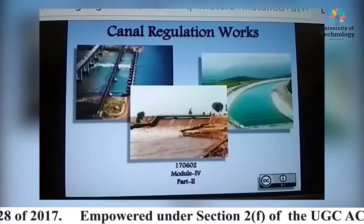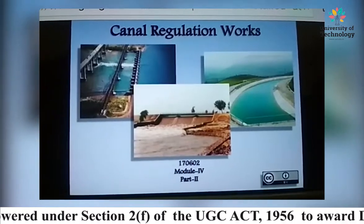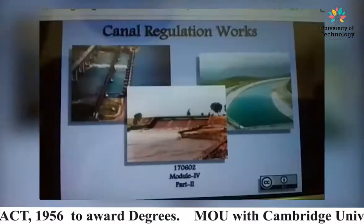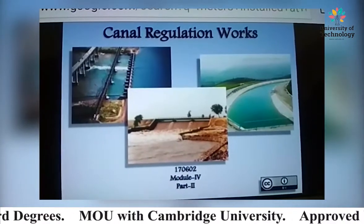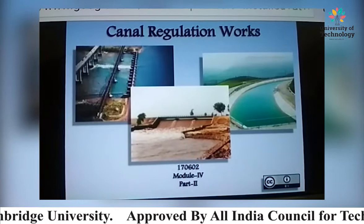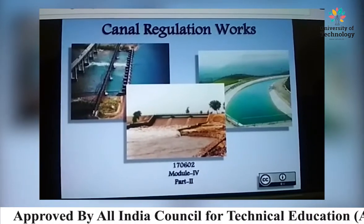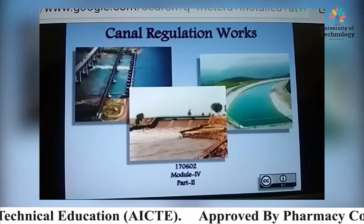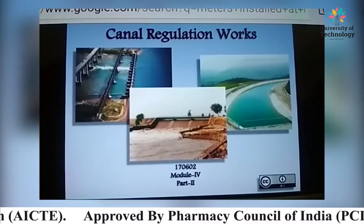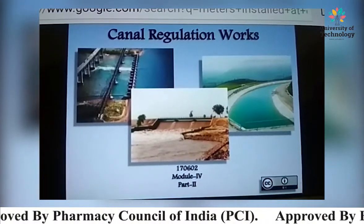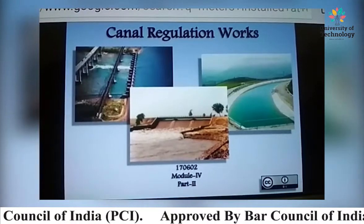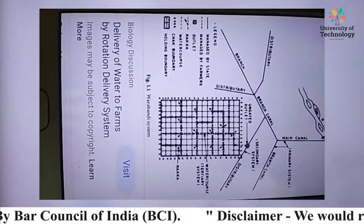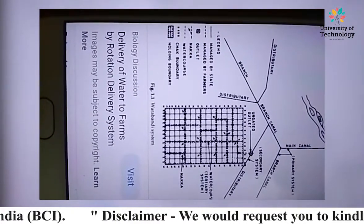In the summer period, maintenance of the canal, drainage system, irrigation channels, and field channels is carried out. Maintenance work is performed during this period, which is also part of improving irrigation efficiency.